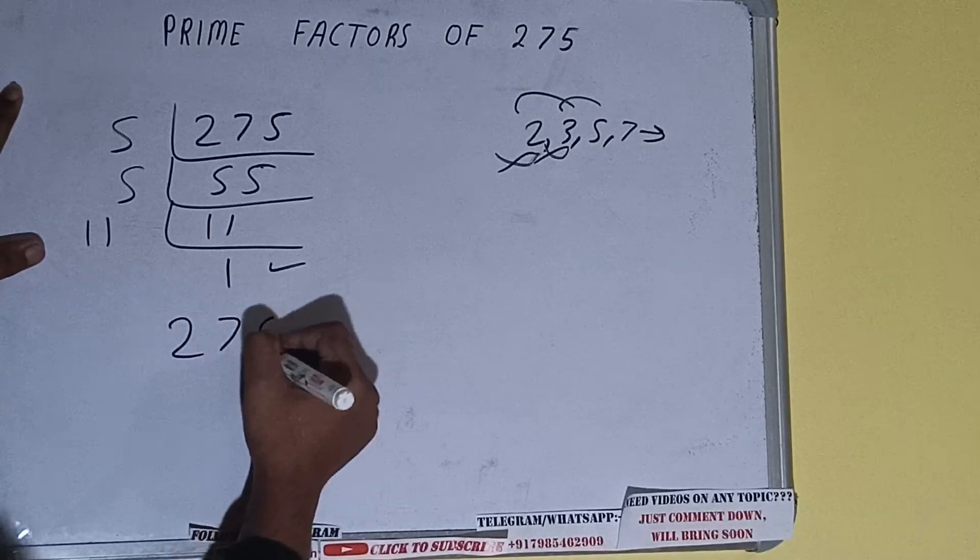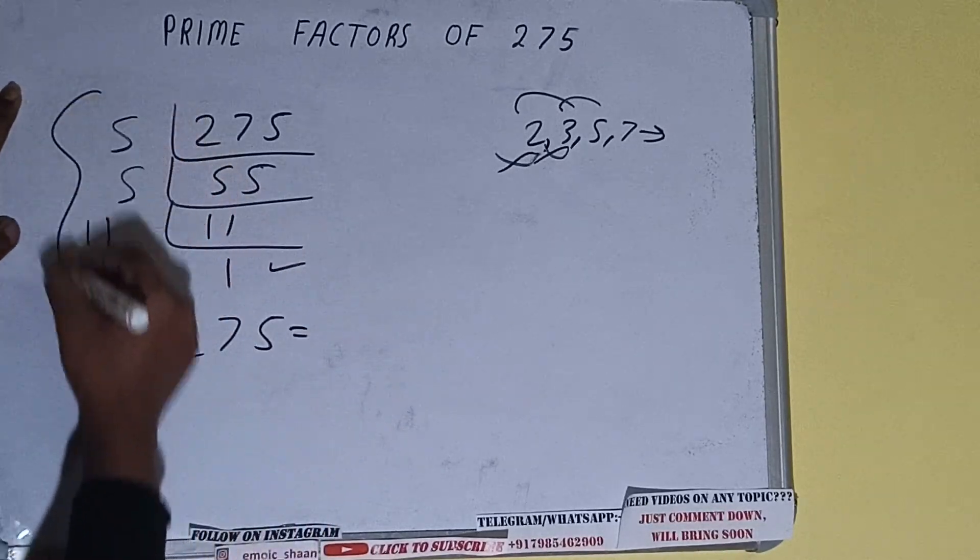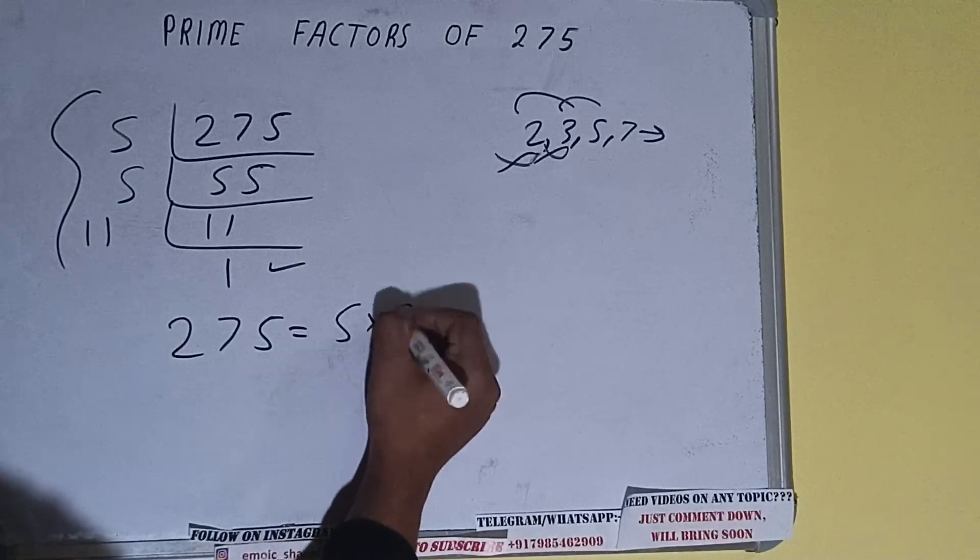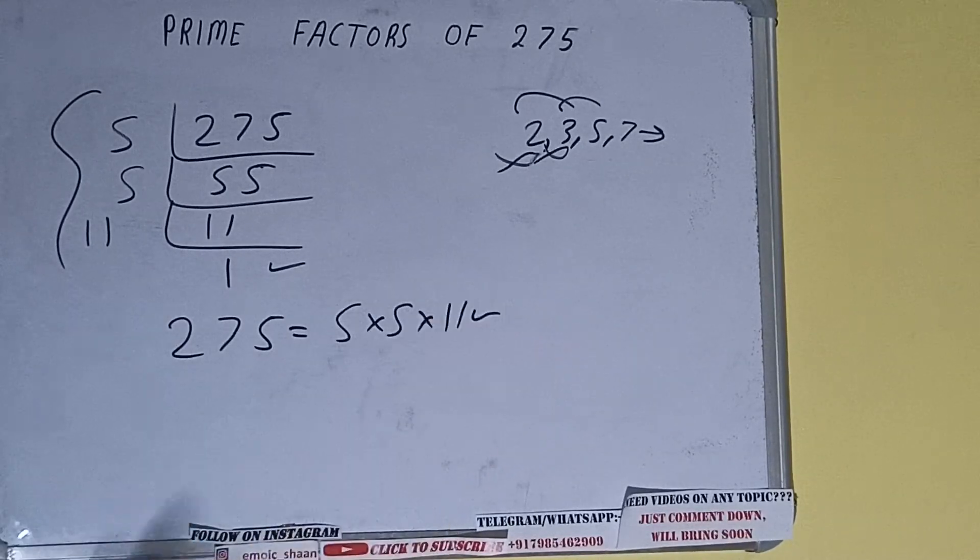That is, prime factors of 275 is equal to multiply whatever we have on the left-hand side. That is 5 times 5 times 11. That will be the answer. So this is all about prime factors of 275.